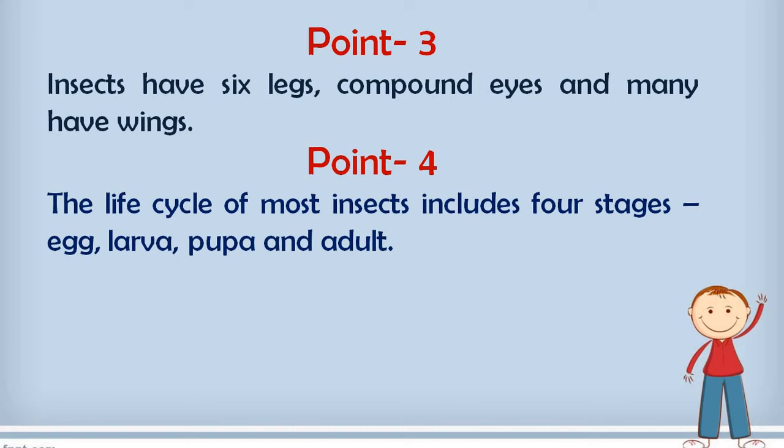Point number 4 is about the life cycle of the insects. We were studied about the life cycle of the butterfly, but remember that the life cycle of most insects, not only of butterfly, includes four stages: egg, larva, pupa and adult. First of all the insect gives egg, and when the egg hatches larva produces. And then larva converted into the pupa and from pupa the insect emerges.